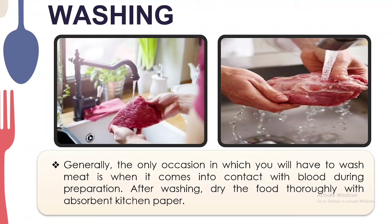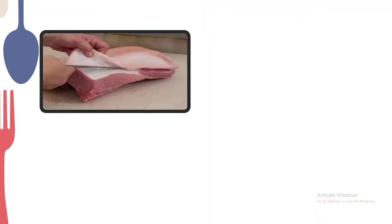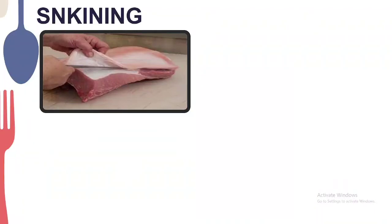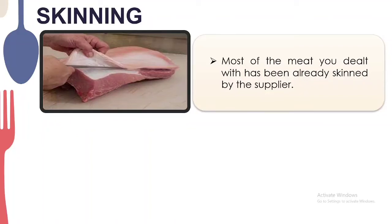The next preparation method, based on the picture, is skinning — removing the skin from the meat. Most of the meat you deal with has already been skinned by the supplier at the market. When we are removing the skin of the meat, we use a boning knife, which is also used to remove bones.